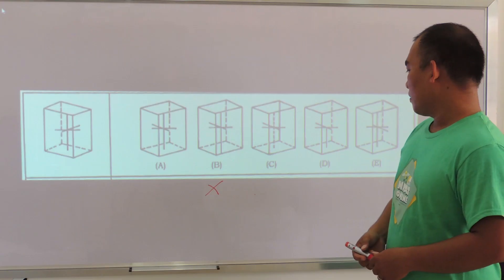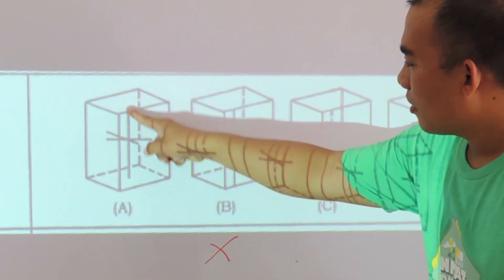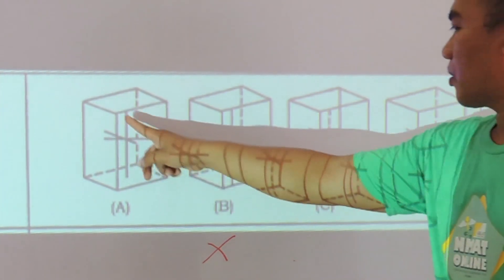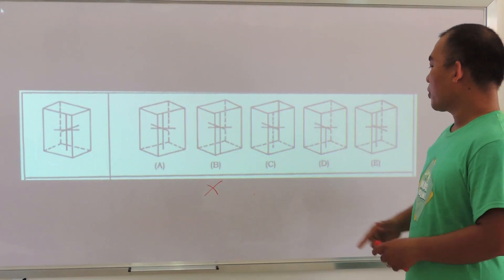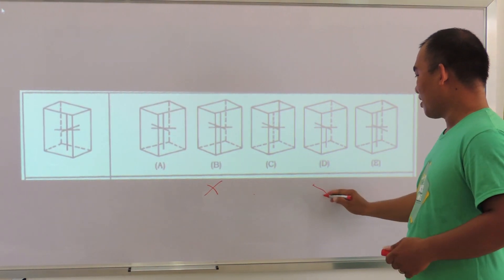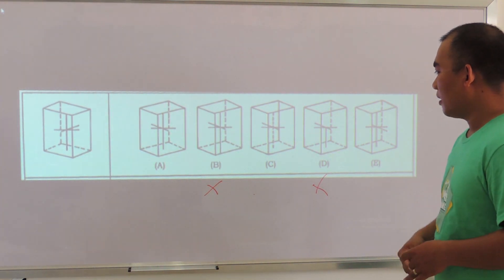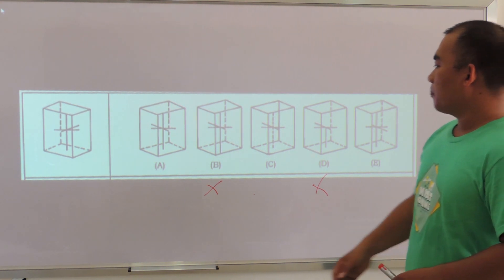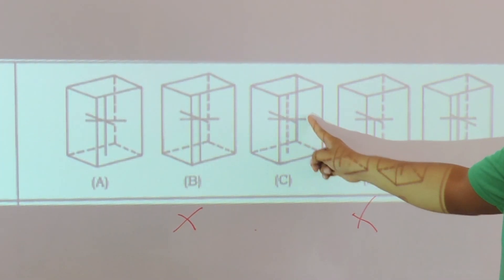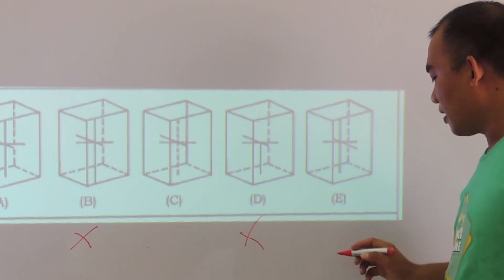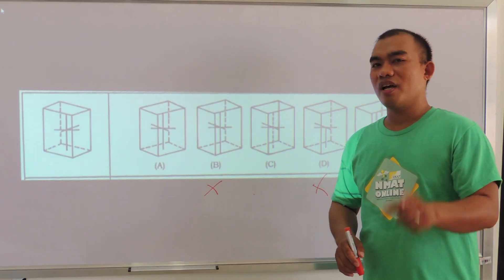Option B is eliminated because it does not touch the center of the figure. Next, I am going to focus on the part above. Applying the process of elimination, I could eliminate option D because it does not contain that part. Next, looking at the right side of the figure, I could eliminate option E. What I am doing is applying PoE, or the process of elimination.